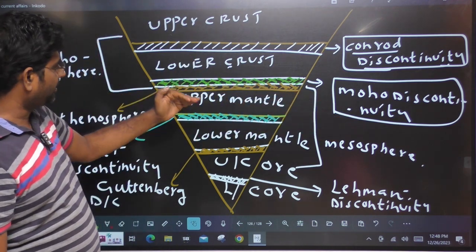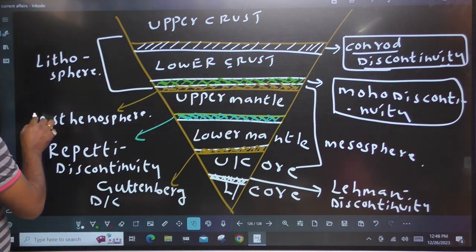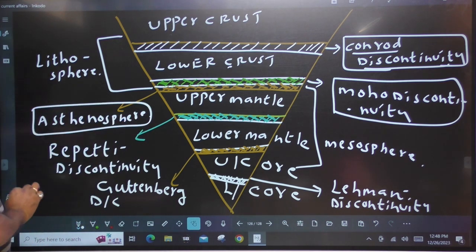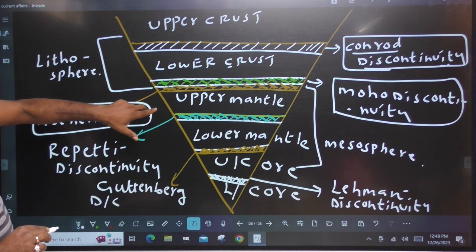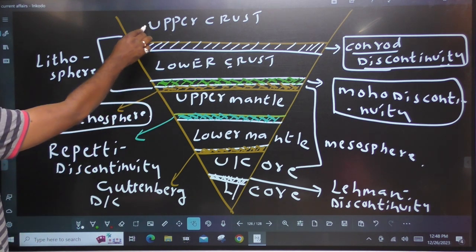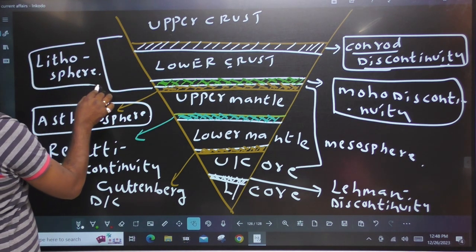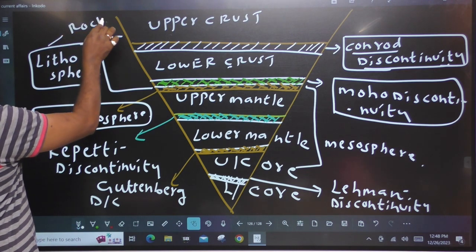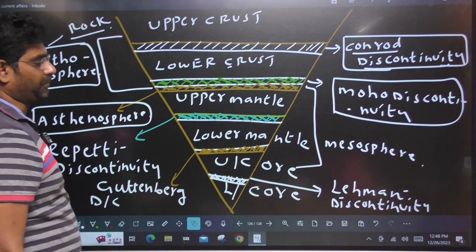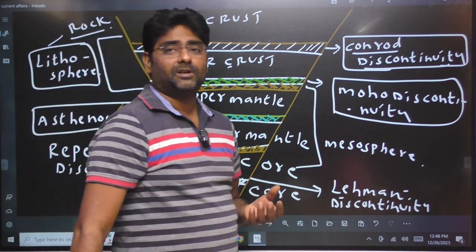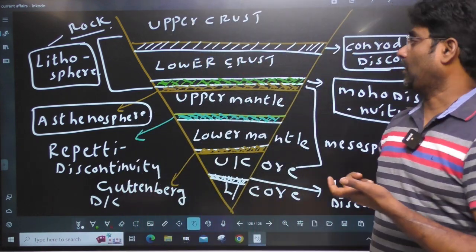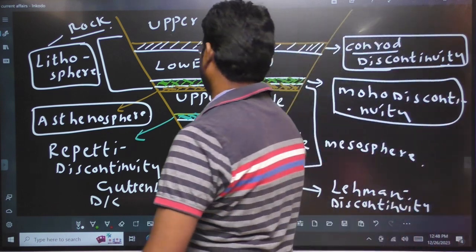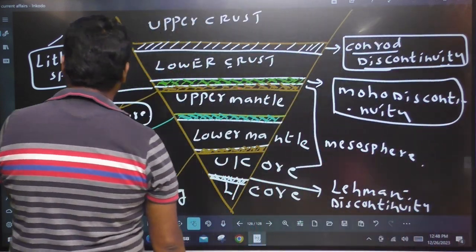This Moho discontinuity is the asthenosphere. Asthenosphere — this is the upper mantle. Upper crust is the lithosphere; litho means rock, solid — lithosphere. So upper mantle to upper crust is the complete lithosphere. Now, this is the asthenosphere.